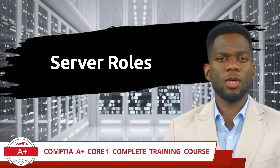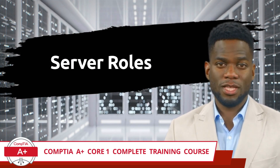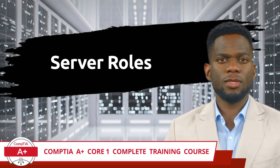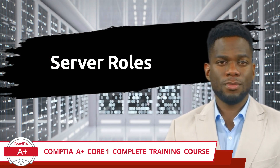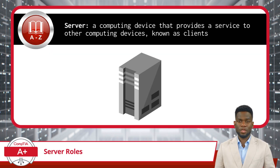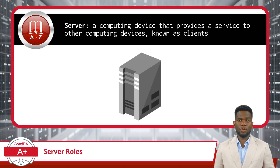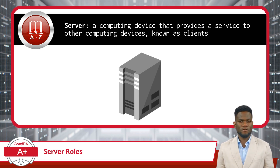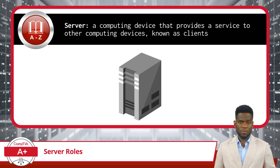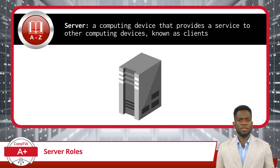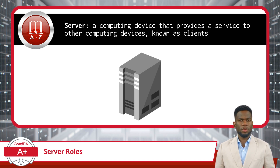CompTIA A Plus Core 1 Complete Training Course, Exam Objective 2.4: Summarize services provided by network hosts — server roles. I'm going to start this video off with a quick definition of what a server is. A server, in a logical sense, is a computing device that provides a service to other computing devices known as clients. A server can perform many roles within a network, and that is what this video is really about.